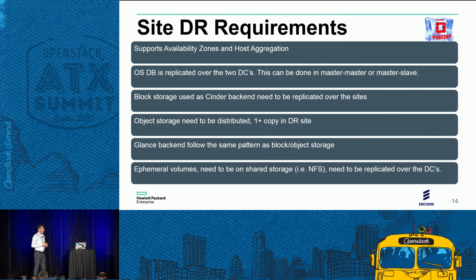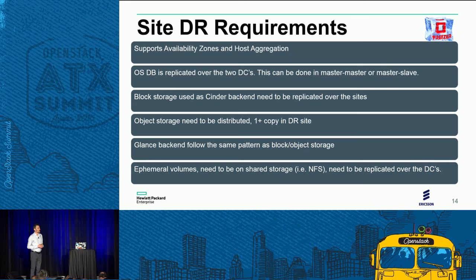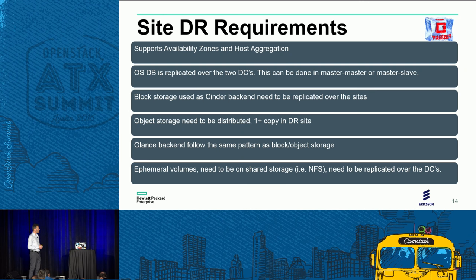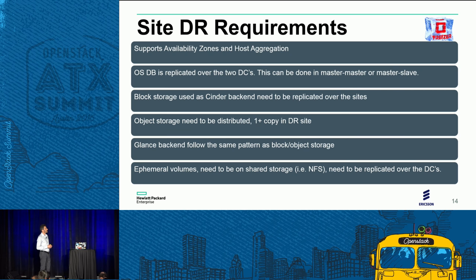Once we had a clear solution for single node or small-number failures and moving workloads within a single site, we started thinking about how to do this at larger scale with a disaster recovery solution between multiple sites. The first point is to have segregation between the two sites — availability zones or host aggregation is probably the best way to achieve that.